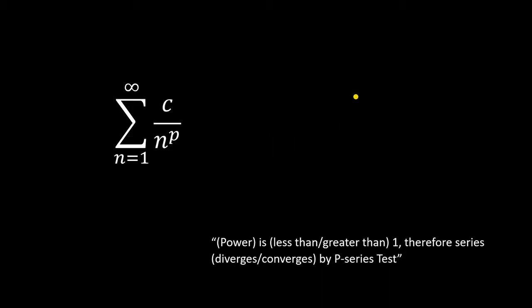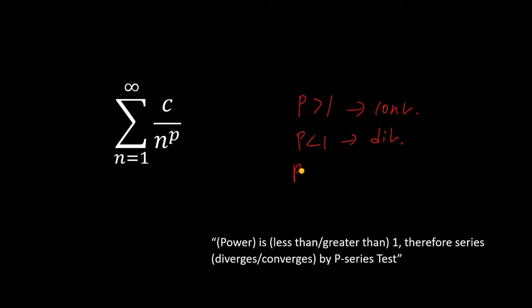Next up, we've got p-series. These are a series with a constant over n to a power p. If p is greater than 1, then the series converges. If p is less than 1, then the series diverges. What do you think happens if p is equal to 1? That's right — if p is equal to 1, then we have the harmonic series, which means it's going to diverge. So basically, if p is greater than 1 the series converges; if p is less than or equal to 1, the series diverges.